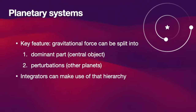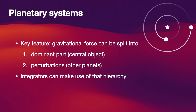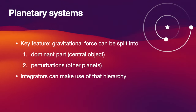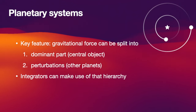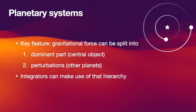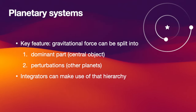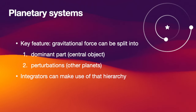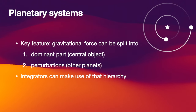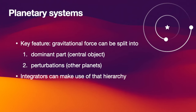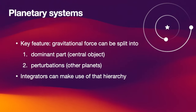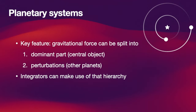One of the key applications for Rebound is solving the differential equations for planetary orbits. There is something special in planetary systems: the gravitational force can be split into a dominant part coming from the central star and perturbations on top of that, mostly from other planets. This feature is not unique to planetary systems — it can also occur at smaller or larger scales, such as moons orbiting a planet or stars orbiting the central black hole in our galaxy, where stellar interactions are perturbations compared to the dominant force from the black hole.